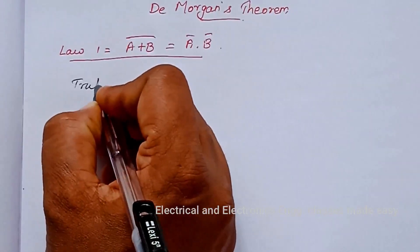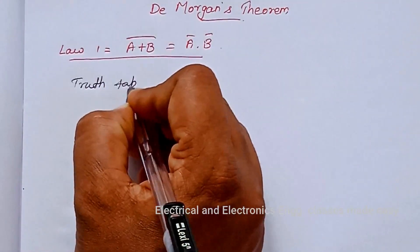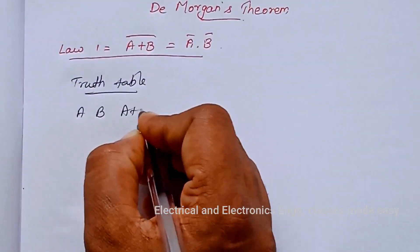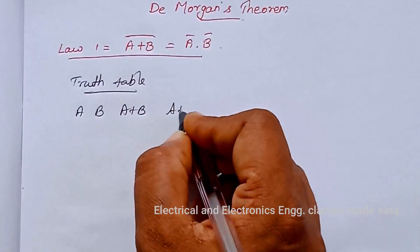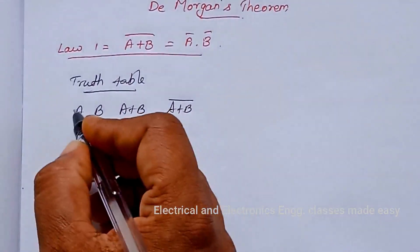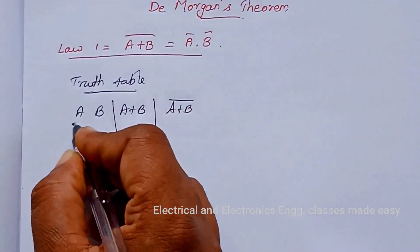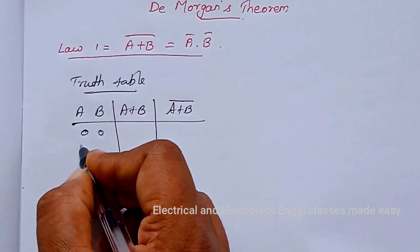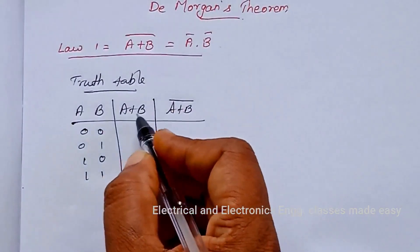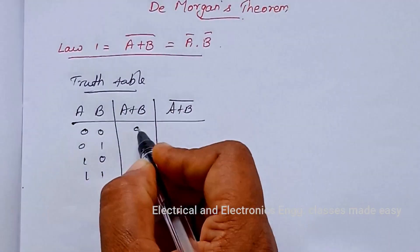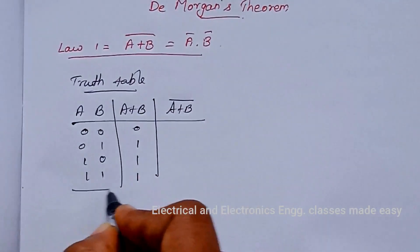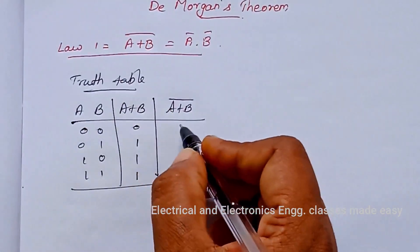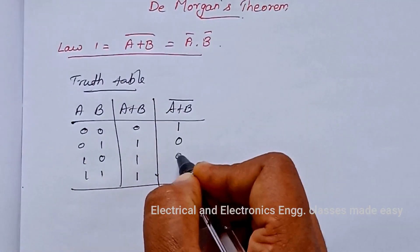The truth table has columns A, B, then A plus B, then A plus B whole bar. For two inputs A and B: 0,0 gives A plus B = 0; 0,1 gives 1; 1,0 gives 1; 1,1 gives 1. So A plus B whole bar is: 1, 0, 0, 0.